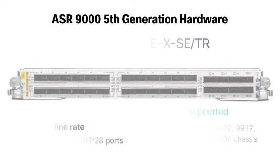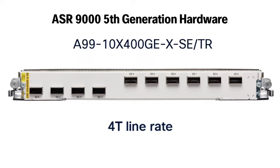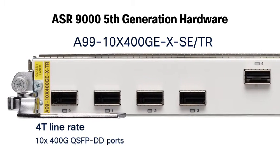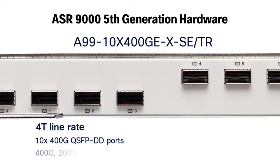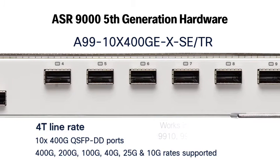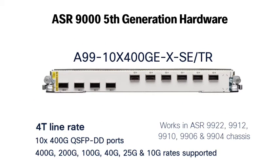Next, the heaviest hitter of the new line cards: the 10x400 GigE line card can support a whopping 4 terabits per second throughput when QSFP-DD is used. All 10 ports can support a single 400 gig port, or two 100 gig ports. If QSFP28 is used, the ports can run at 100 GigE speeds; QSFP+ allows the ports to run at 40 GigE. On top of this, every port can also break out as 4x25 GigE or 4x10 GigE ports. Another major advantage of this line card is that MACsec is supported on all 10 ports.